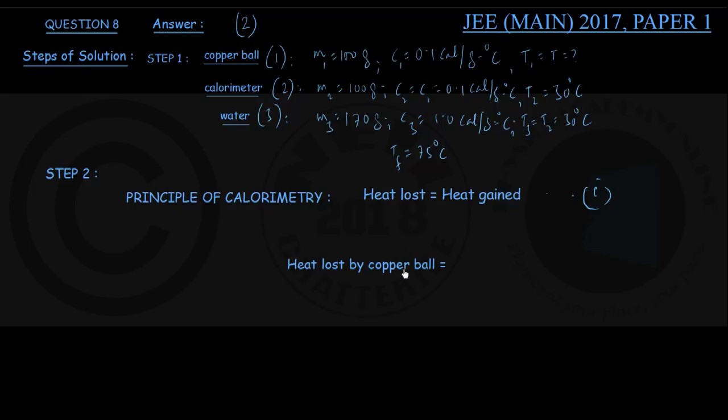In step number 2, we recall the principle of calorimetry which says that in a heat exchange, provided there is no heat lost to the surroundings, heat lost by the hotter body is equal to the heat gained by the colder body or bodies. In this case, copper ball loses heat while calorimeter and water both gain heat. I'll call this equation number 1.